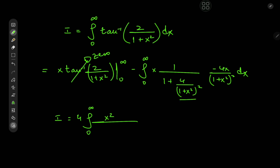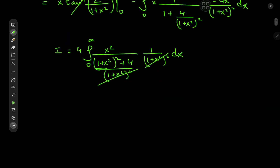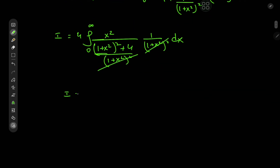...we can expand using 1 plus x squared squared in the denominator, yielding 1 plus x squared squared plus 4 divided by 1 plus x squared squared, and we also have a 1 over x squared squared term here as well, which results in some nice cancellation. So the target integral reduces to 4 times the integral from 0 to infinity of x squared divided by x to the fourth power plus 2x squared plus 1 plus 4, which is 5.